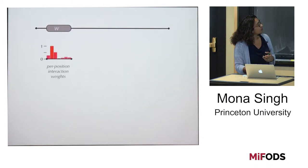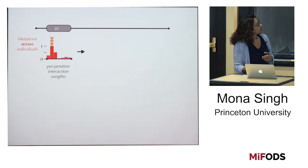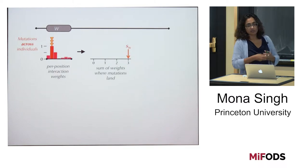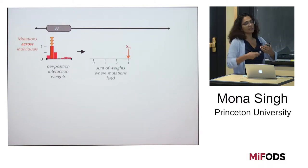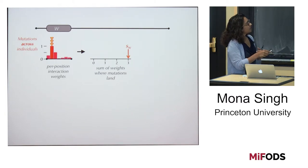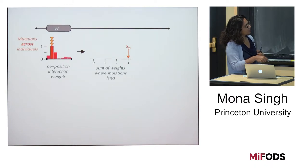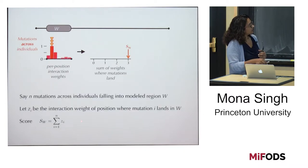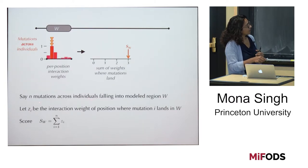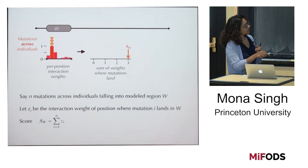We look across all samples and see where mutations fell within this protein. In this example, three mutations fell into one position that has weight 1. We compute a score as the sum of the weights where mutations land. More generally, we have n mutations, and if z_i is the interaction weight of the position where mutation i lands, then the score is the sum of these weights. In this case, the score is just 3.